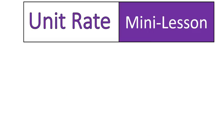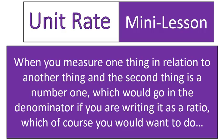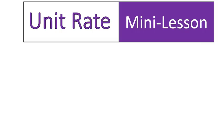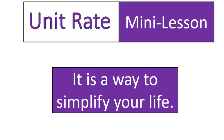Mini-lesson. When you measure one thing in relation to another thing, and the second thing is the number one, which would go in the denominator if you're writing it as a ratio — stop. Unit rates should not be this complicated. They really shouldn't. So when you're thinking about unit rates, I want you to slow down and simplify. Unit rates are basically made as a way to simplify your life. Let me show you how.